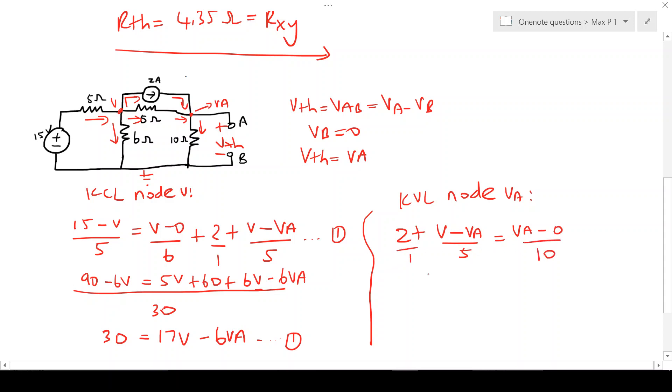Common factor we can say that is 10. That will be 20 plus 2V minus 2VA equals VA. So if we simplify that, we're going to have 20 equals minus 2V plus 3VA.